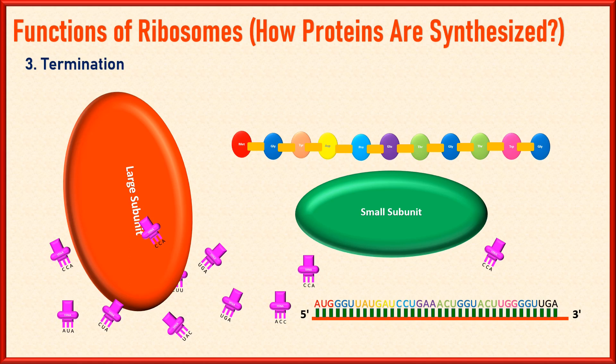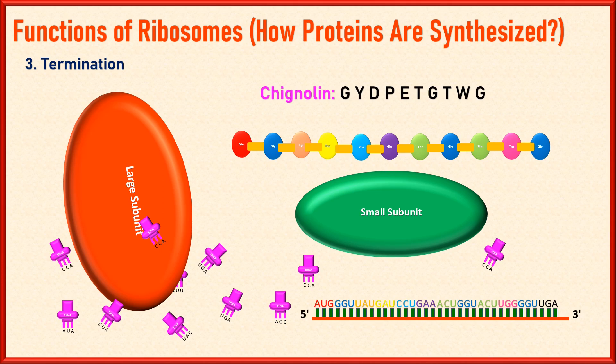Here is the newly formed protein chignolin. In this way, ribosomes form all the proteins required by the cell, and this is the reason they are called protein factories of the cell. In case of any questions, your comments would be appreciated and addressed. If useful, do press the like button. Thanks for your time.